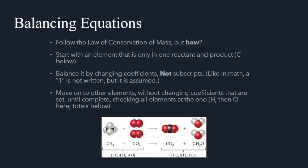Balancing is done by changing the coefficients, not the subscripts. When we look at the subscripts for chemical compounds, those are unique to that particular compound. So if I were to change the number of atoms within that compound, it would no longer be that compound. H2O is not going to be the same as H2O2. So we're just simply trying to multiply the number of molecules to get the correct ratios.